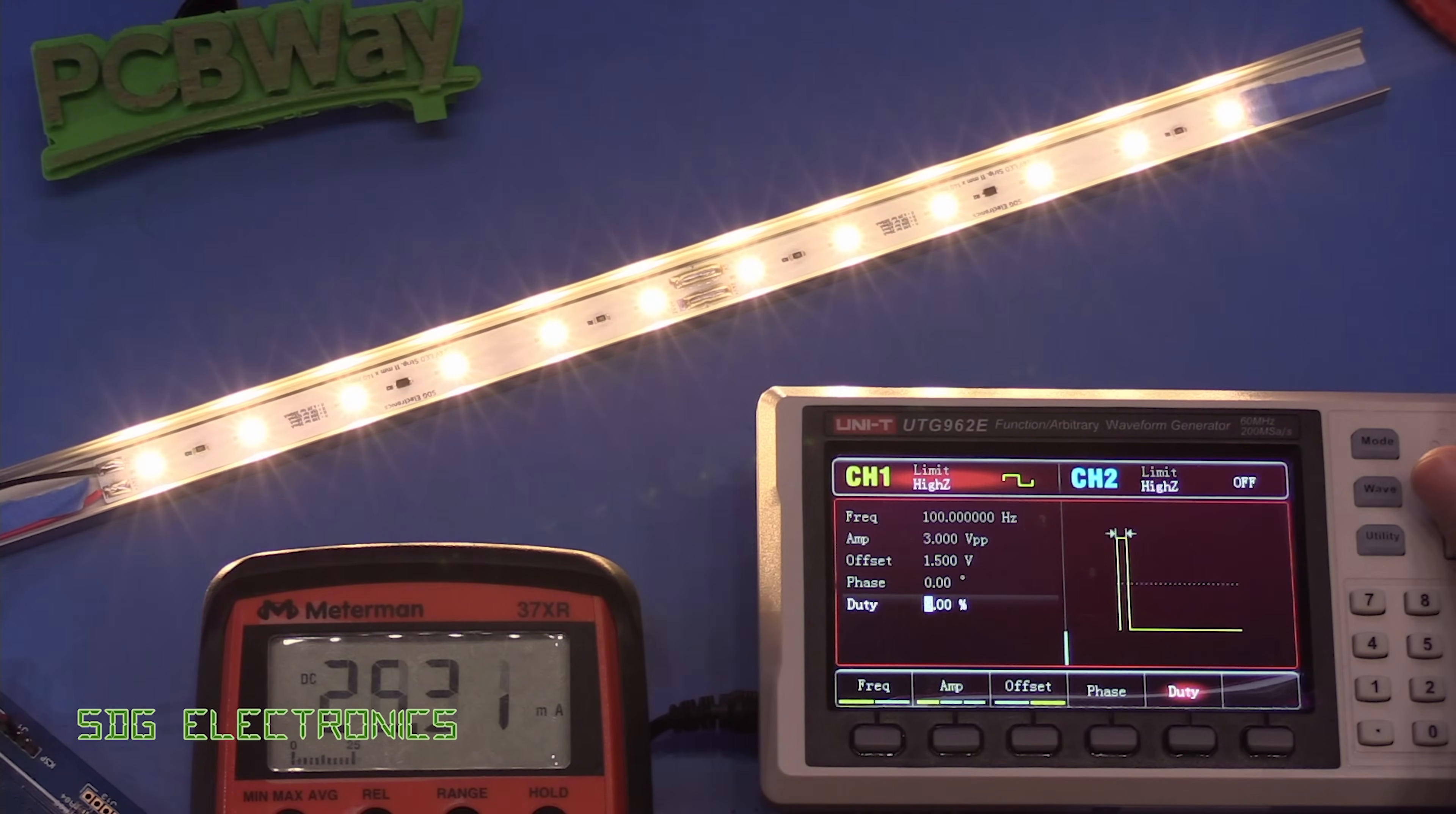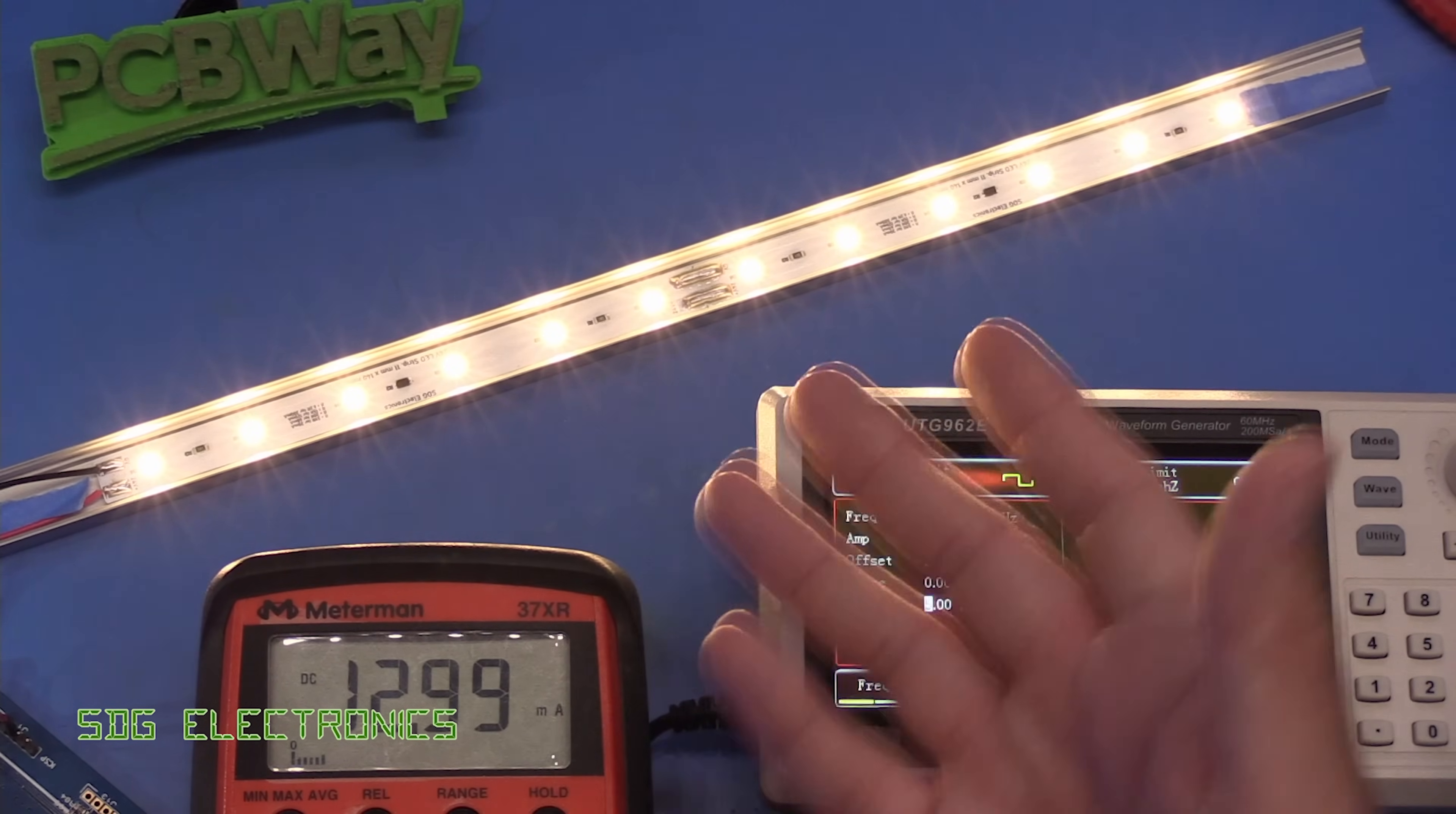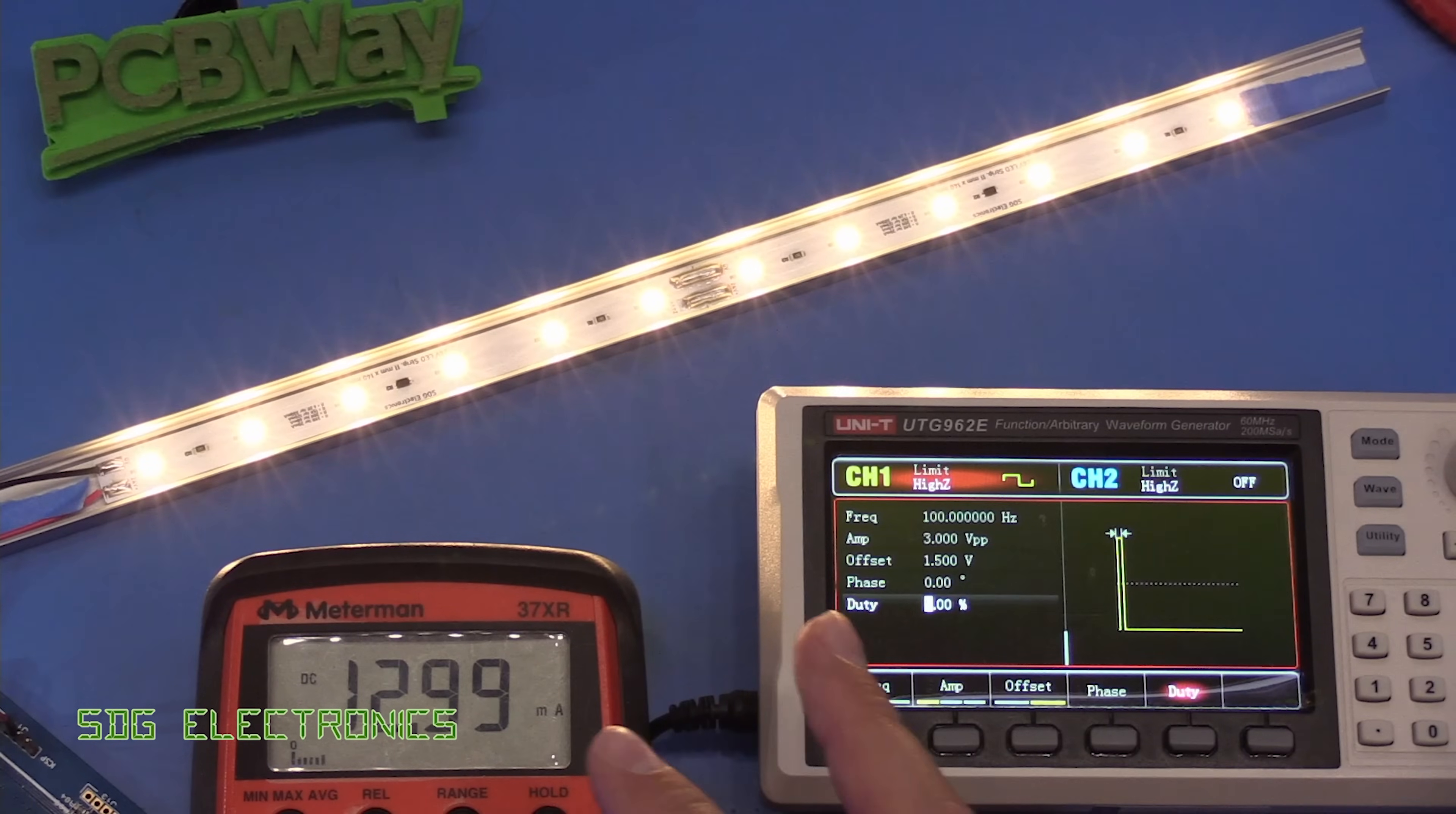If we change that duty cycle down to the minimum recommended 5 percent you can see we're about 13 milliamps so we're definitely still got the LEDs illuminated but the dimming is starting to go non-linear